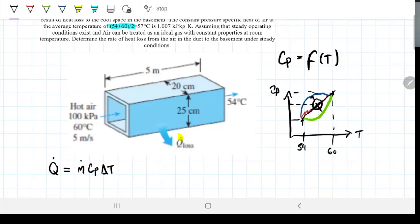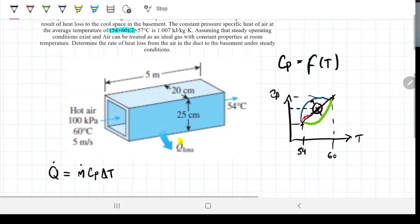Delta T, 62 minus 54, that's 6, easy. Cp, we've been given, that is 1.007, easy. The only thing we don't have is a mass flow rate. So if we find the mass flow rate for this problem, we've solved the problem. To find the mass flow rate, we're obviously going to use these conditions that are given here. Check out.